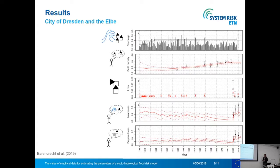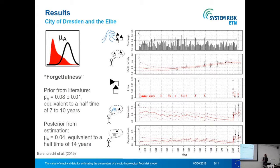The settlement density mainly grows with an external growth rate calculated for all cities of Germany, but this growth rate is a bit lower if people become aware of the flood risk and reduce growth in the floodplain or move away.